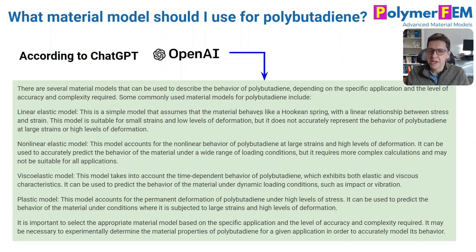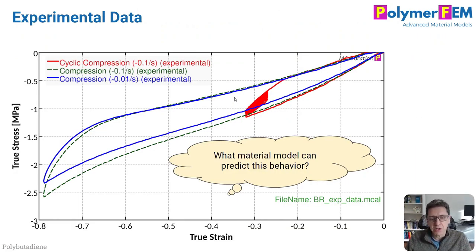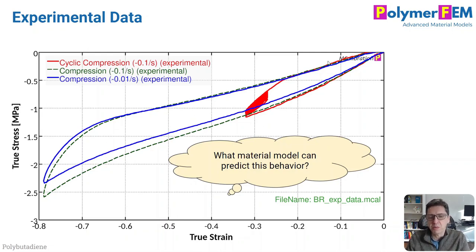I thought it was interesting to start with that, but I think we can do better — and that's what I want to focus on here today. So let's look at the experimental data I have for this rubber. I tested the rubber in uniaxial compression followed by unloading at two different strain rates. Then I did a cyclic test. I compressed it to about this strain here, and then cyclically went back and forth at a frequency of 1 Hz for 600 seconds.